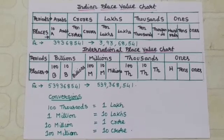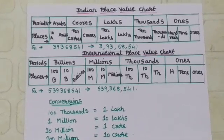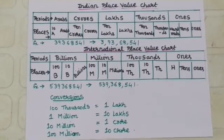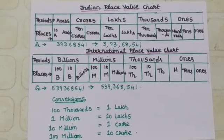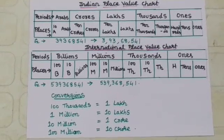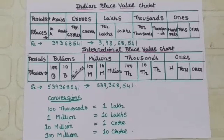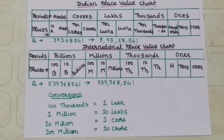In Indian place value chart, we have periods and places. The periods are ones, thousands, lakhs, crores, arabs, and so on. Here, we group the periods 3, 2, 2, 2, and so on. In ones period, we have the places ones, tens, hundreds.